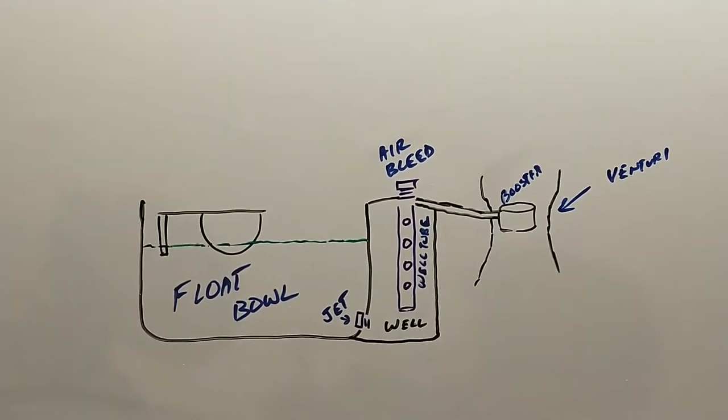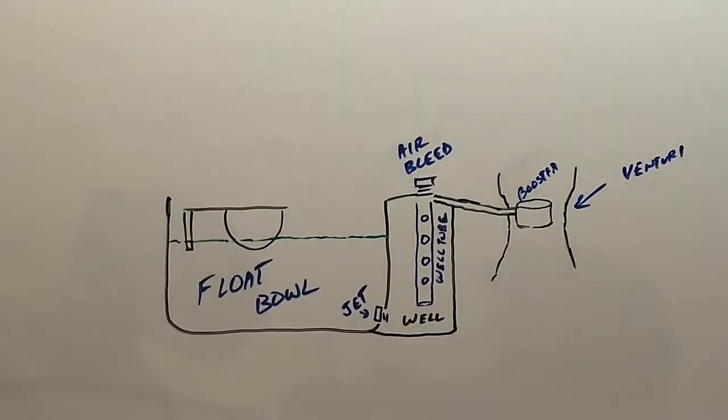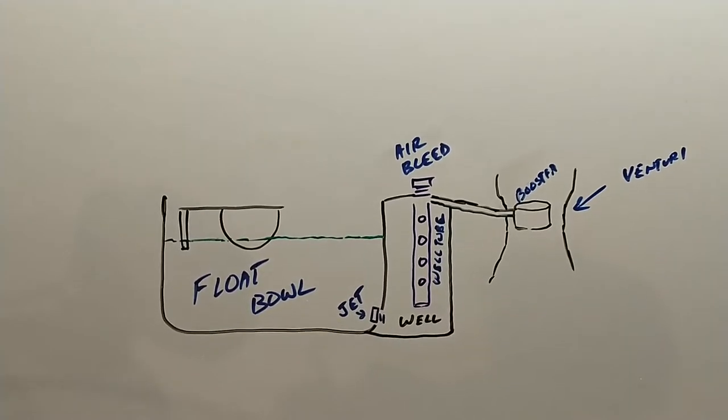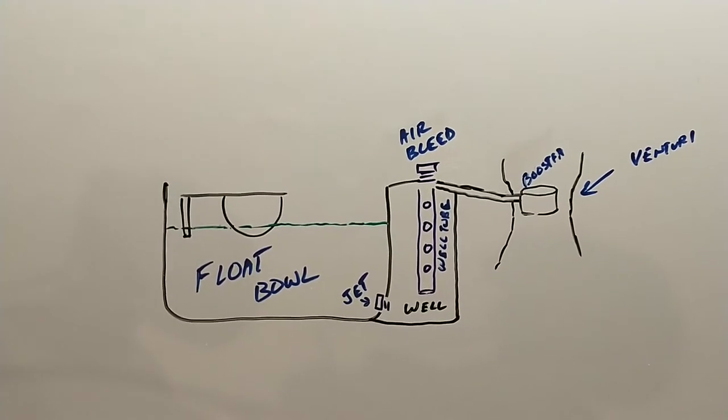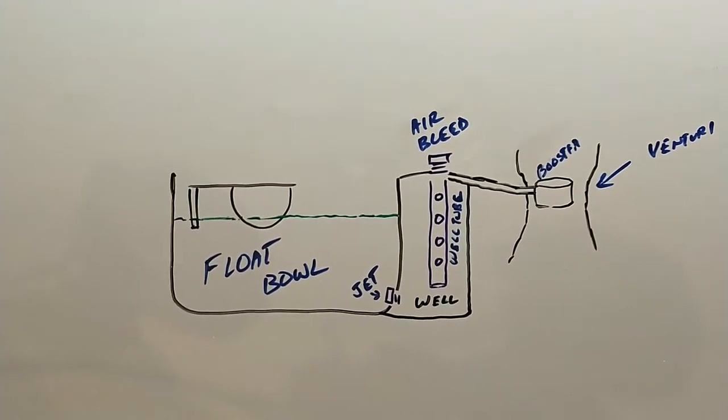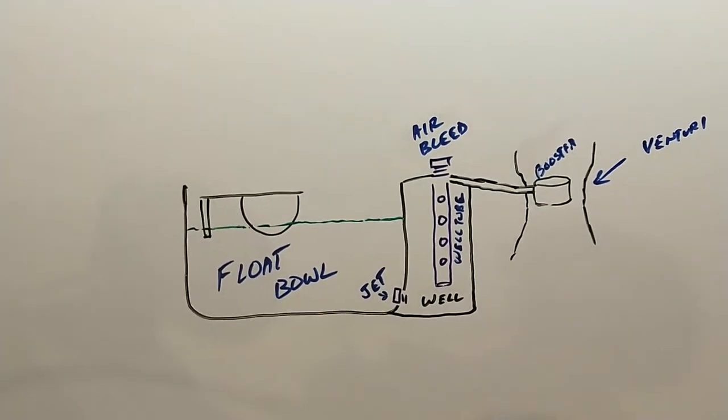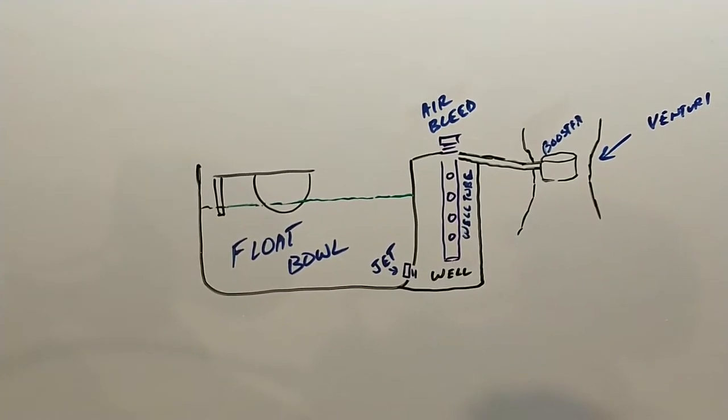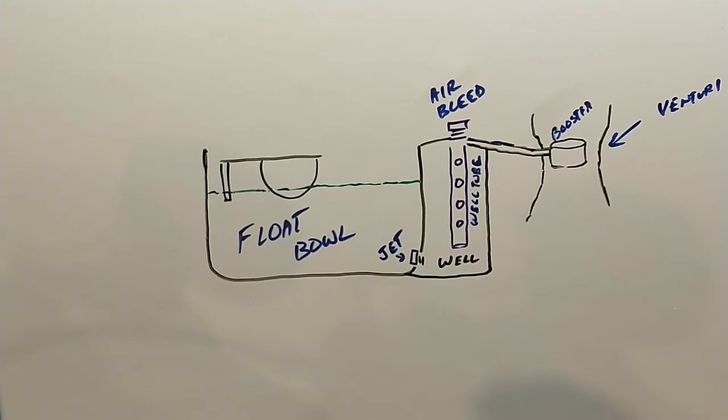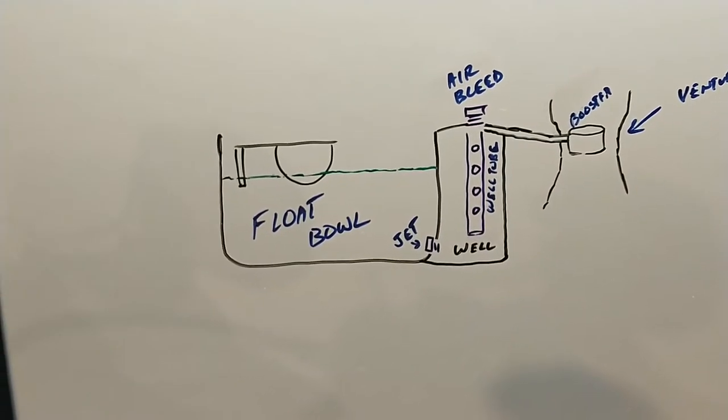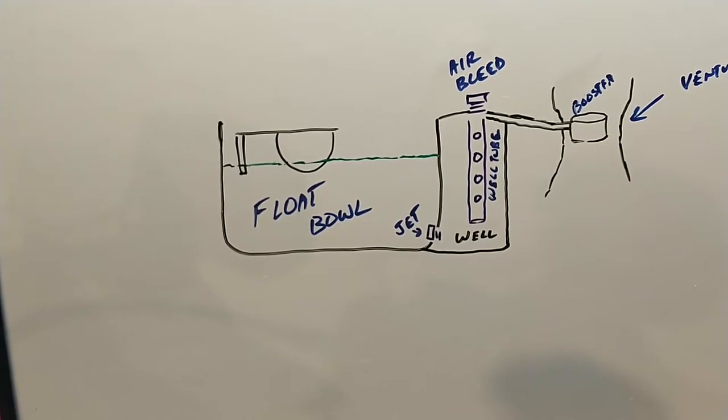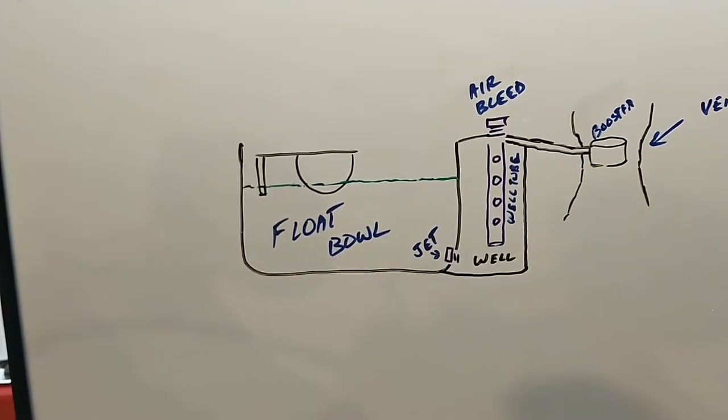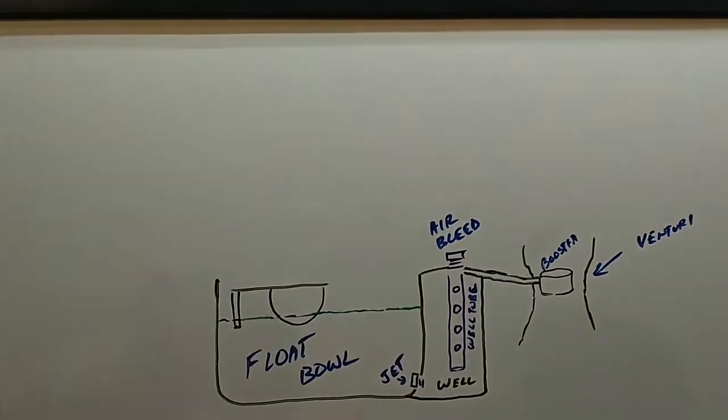So here we see a very crude drawing of a typical carburetor. We have our float bowl on the left, it's full of fuel. We have our jet at the bottom of the float bowl. That's how the fuel gets into the main well. And we see our main well. Now the main well is sealed except for the jet, the air bleed, and the booster. So we have a vacuum signal on the booster with engine speed. We have an air bleed which allows air into the main well. And we have a jet which allows fuel into the main well.